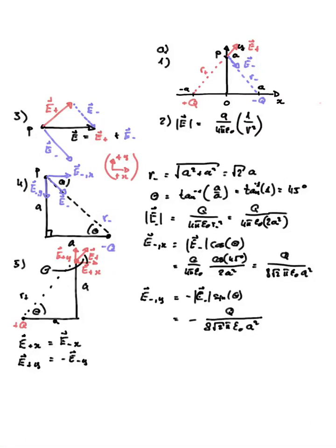Hello everyone. In this problem we're asked to find out a bunch of things about the resultant electric field of two point charges that are equal in magnitude but opposite in sign. We're asked to draw the diagram where the positive charge +q is located at x equals minus a, and the negative charge -q is located at x equals plus a. We're interested in finding the net electric field at point P, which is along the y-axis at a distance a from the origin.